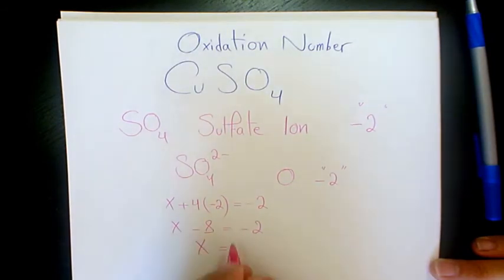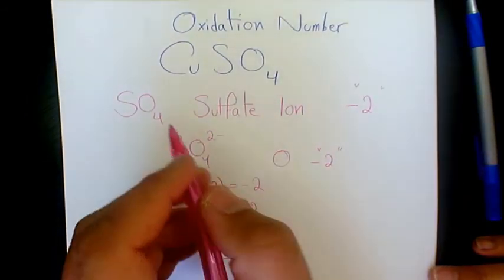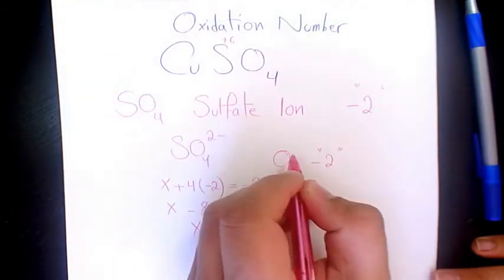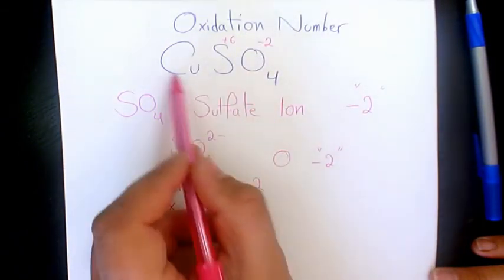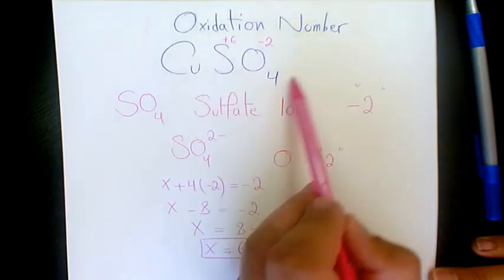So it means that X is 8 minus 2, which is going to be 6. So that's the charge for sulfur here, 6, and negative 2 in here. What about copper? As you see here, the whole thing is zero, is neutral.